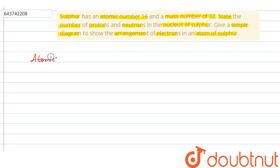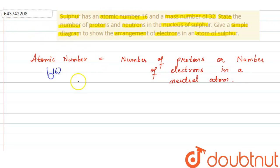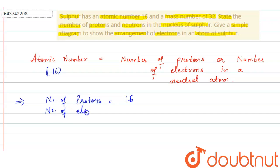First of all, we know that the atomic number of an element is equal to the number of protons, or the number of electrons in a neutral atom. The atomic number of sulfur is given as 16, which means the number of protons and the number of electrons in sulfur will both be 16.